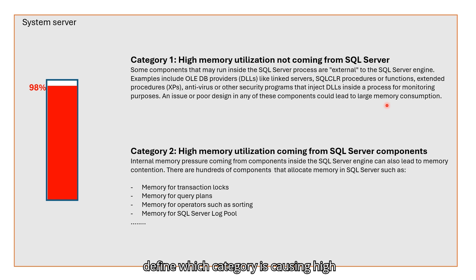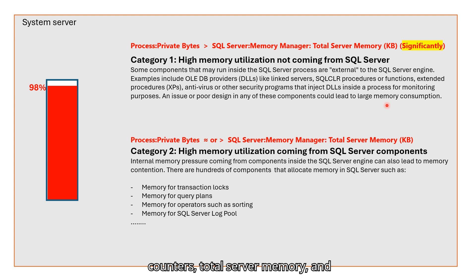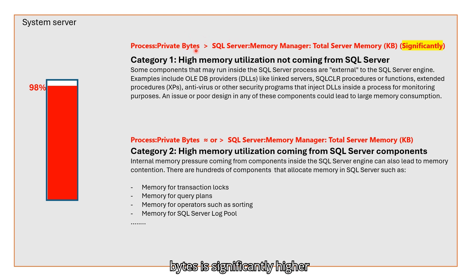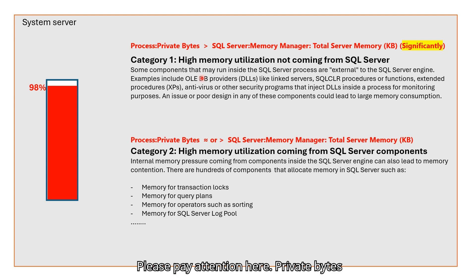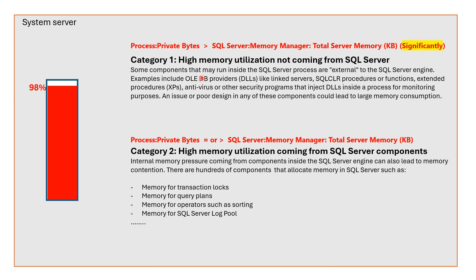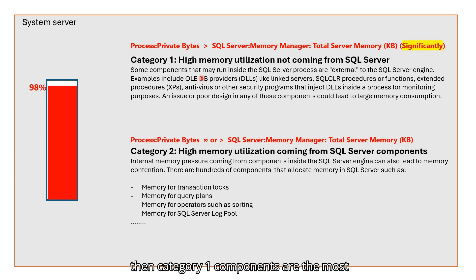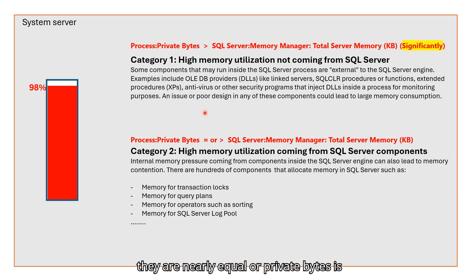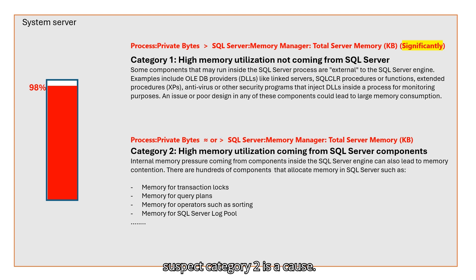So how to define which category is causing high utilization? For this, you can easily utilize performance monitor counters: total server memory and private bytes. If private bytes is significantly higher than the total server memory, category 1 is causing high memory utilization. Private bytes being higher than total memory is expected usually, but if it is significantly high like 4 GB or 5 GB, then category 1 components are most probably causing the issue.